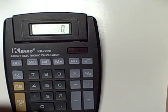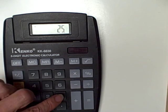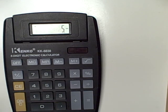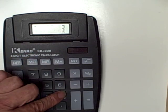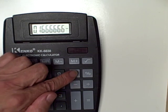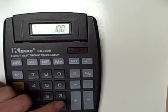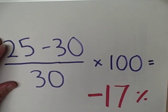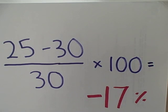What we're going to do is bring the calculator out and we go 25 minus 30 equals — there we have our numerator, and notice the negative sign has already appeared. Divide by 30 equals, times 100 equals, and we get 16.66% with a negative sign, and we're going to round that off to negative 17%.